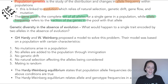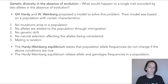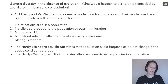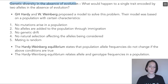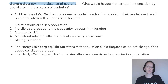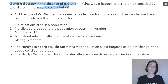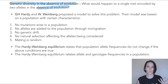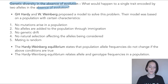The Hardy-Weinberg equilibrium was established by scientists Hardy and Weinberg. They developed a formula to study genetic diversity in the absence of evolution. Basically, they asked: what would happen to a single gene encoded by two different alleles if there were no natural selection, no mutations, no competition — no evolution at all? Hardy and Weinberg proposed a model to answer this.